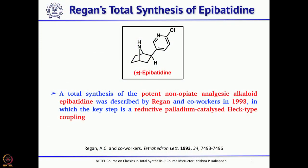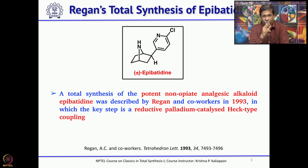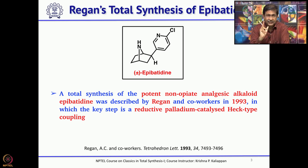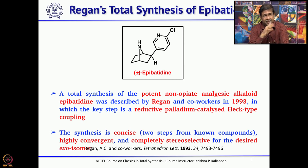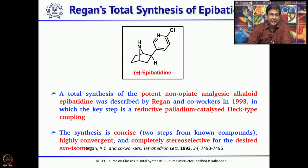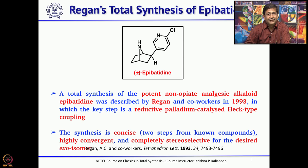The first synthesis we will discuss is Regan's total synthesis. He used two key reactions: one, a Diels-Alder reaction; and second, a reductive palladium-catalyzed Heck-type coupling reaction to synthesize epibatidine. This synthesis is highly stereoselective and they could obtain only the exo isomer in the end. Of course, this is a racemic synthesis and not a chiral one.